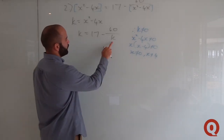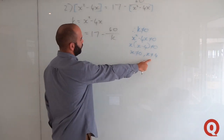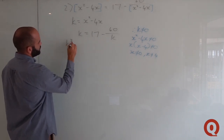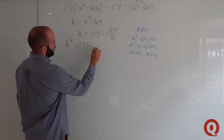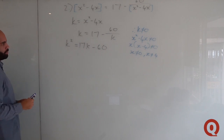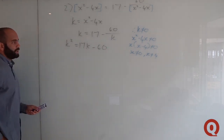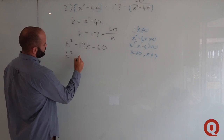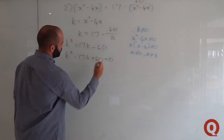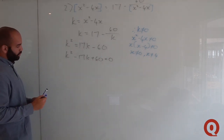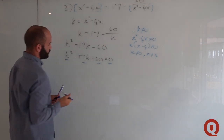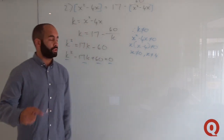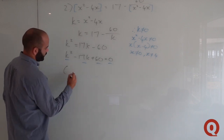Multiplying through by k — which is allowed since we've established k ≠ 0 — gives k² = 17k − 60. Rearranging into standard form: k²−17k+60 = 0. We now have the expression in standard quadratic form, and we can proceed to factorize.